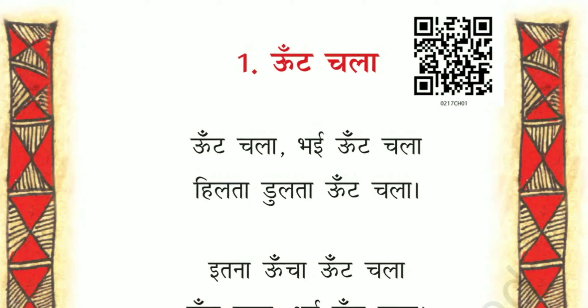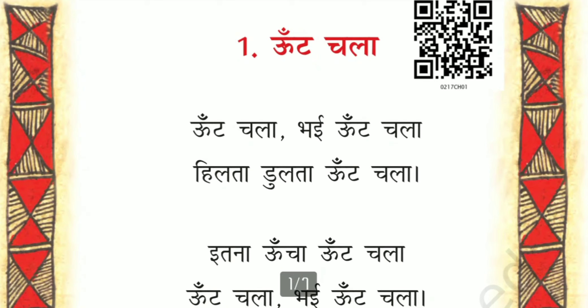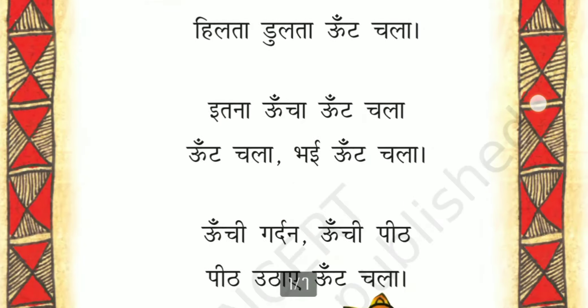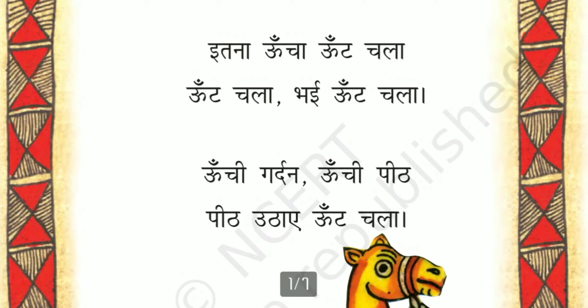Today we are going to learn Class 2 Chapter 1 — 'Oont Chala' (The Camel Walked). This is a poem about a camel. Oont chala bhai oont chala — camel walked, oh camel walked. Hilta dhulta oont chala — hilta dhulta means shaking his whole body, the camel walked. Itna ooncha oont chala — the camel walked so high, because the camel is so tall.